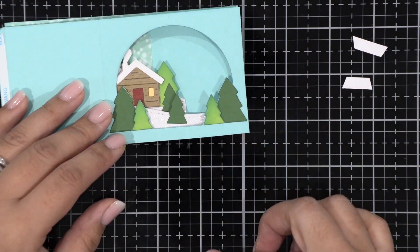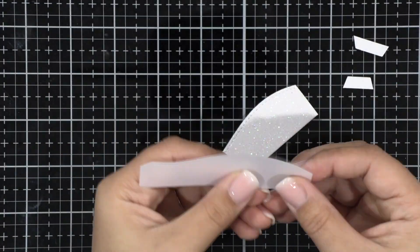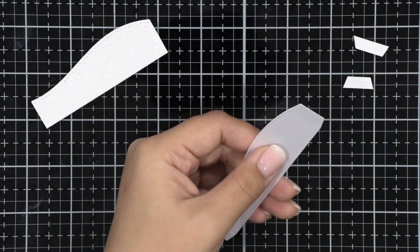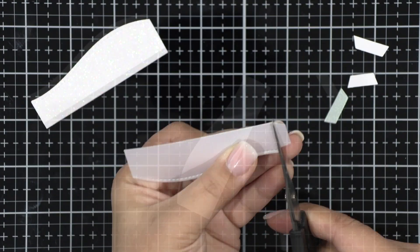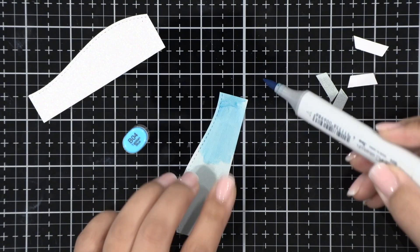I go ahead and trim off the flaps once more since we don't need those for the front of the card and then I wanted to cast a blue hue on my pond so I'm using the BO4 Copic marker to color the back side of the vellum to give it that blue color.